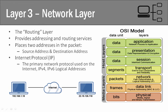Now we're down to layer 3, the network layer. This is the very top layer of our media layer, meaning it's the very top of the layers dealing with the network portion of the OSI model. So we're no longer dealing with what's happening on the computer — now we're dealing with what's actually happening on our network.